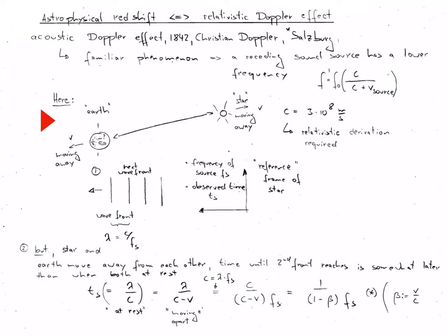One can modify this equation and obtains that the time ts is given by c divided by c minus v times the frequency.